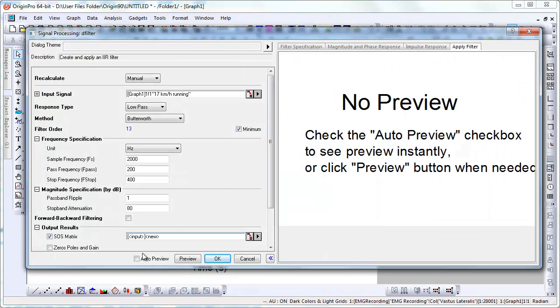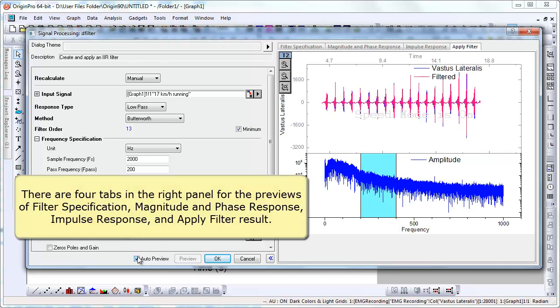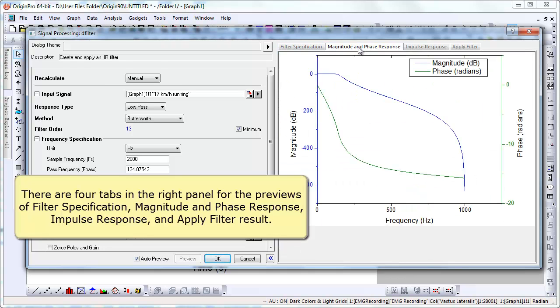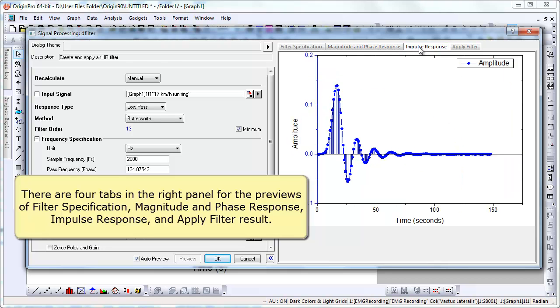This dialog has an auto-preview. There are four tabs in the preview window for viewing the filter specification: magnitude and phase response, impulse response, as well as the Apply Filter result.